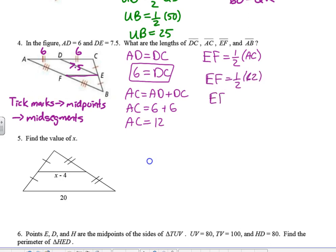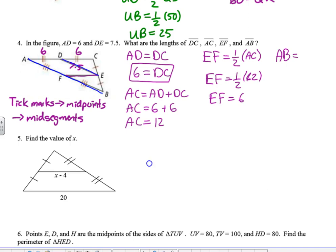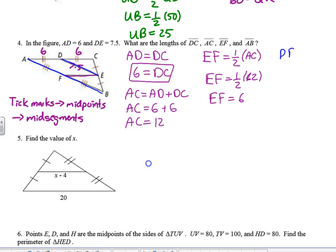The last value to find is AB. DE equals one half of AB, so doubling both sides: 2 times DE equals AB. Since DE is 7.5, AB equals 15. So we've found all the pieces we were asked to find.